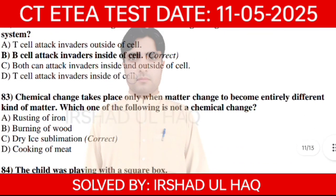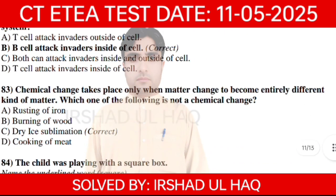A chemical change takes place only when matter changes to become an entirely different kind of matter. Which one of the following is not a chemical change? Option number C: Dry ice sublimation.